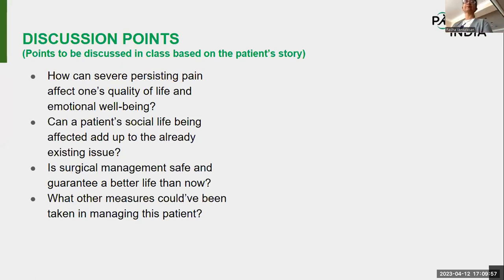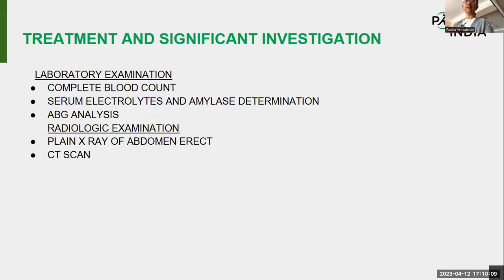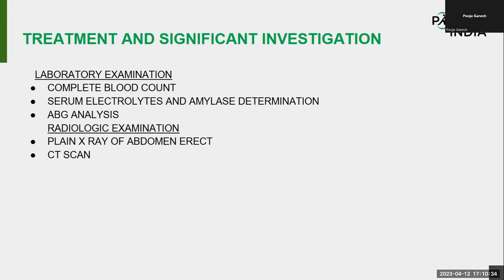Going back to the investigation slide — lab results were all normal. On radiological examination, plain X-ray and CT scan showed bowel obstruction. It was a case of CA pancreas. Regarding diagnosis and staging, the presenter noted she did not have full reports. It was CA pancreas, probably with secondary involvement.